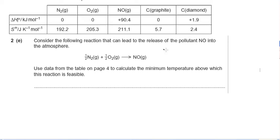Consider the following reaction that can lead to the release of the pollutant NO into the atmosphere. And as I'm reading it, there's certain triggers. Look, it's half N2 and half O2, so I might have to take that into consideration, but I see it straight away. Use data from the table on page 4 to calculate, and I've actually taken the table here from page 4, to calculate the minimum temperature above which the reaction is feasible.